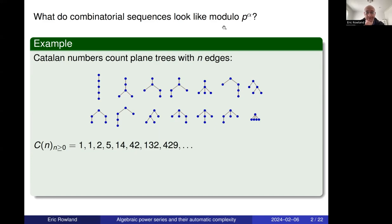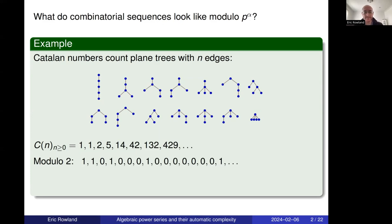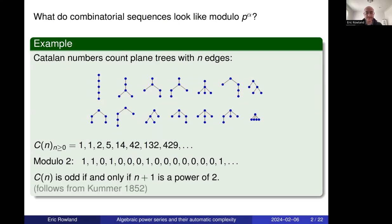What people started doing was reducing the Catalan numbers and other sequences modulo two. The nth Catalan number is odd (i.e., 1 mod 2) if and only if n+1 is a power of two. This follows from the representation of the nth Catalan number as the binomial coefficient 2n choose n divided by n+1, together with Kummer's result on the highest power of p dividing a binomial coefficient.